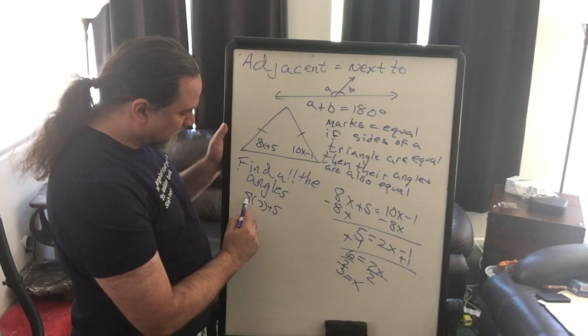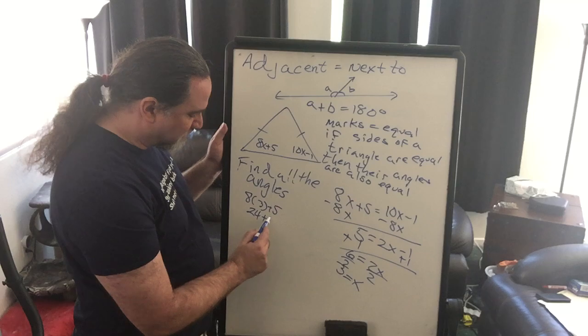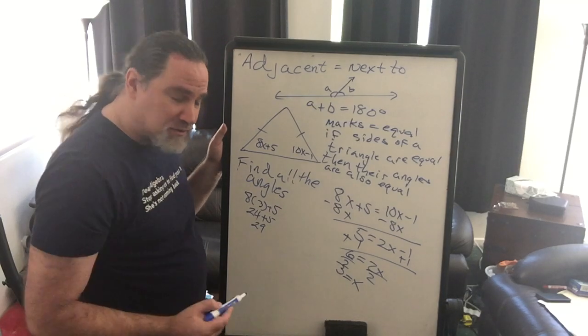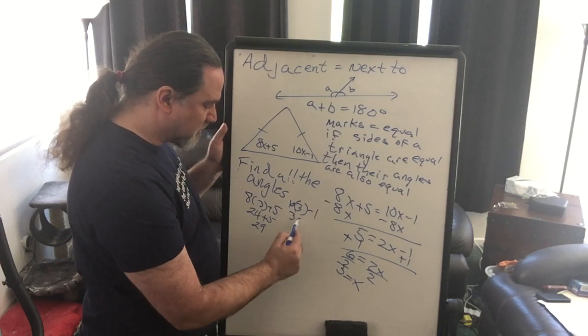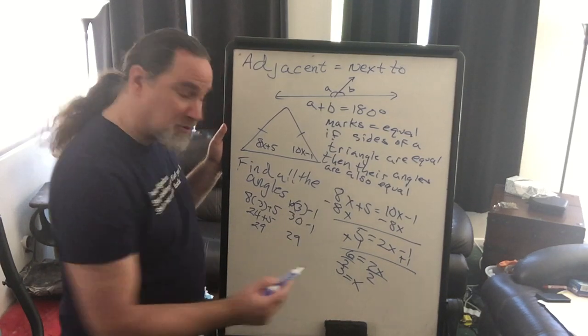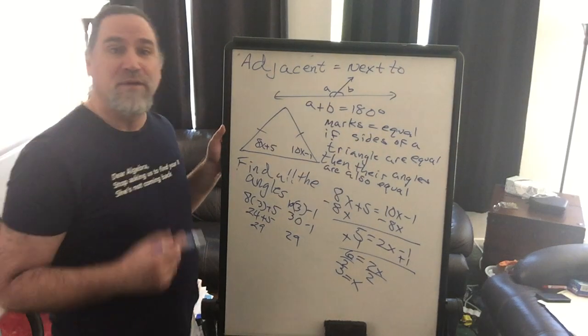When we do that, we can see that they are equal. We can say 8 times 3 plus 5, 8 times 3 being 24, 24 plus 5 is 29. We can put it into this one: 10 times 3 minus 1 is 30, 30 minus 1, hey, they were both 29 degree angles.